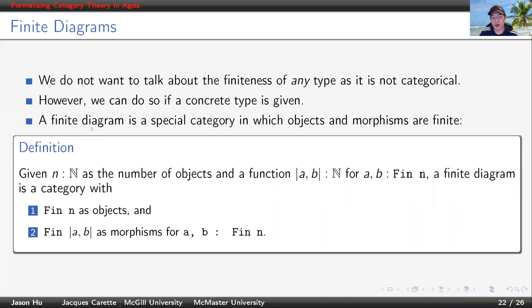That motivates a very specific category, a finite diagram. In a finite diagram, we make sure the objects and the morphisms are of finite set, which is specified as this fin type here. Since we know fin pretty well, it's even safe to think about these categories set-theoretically.